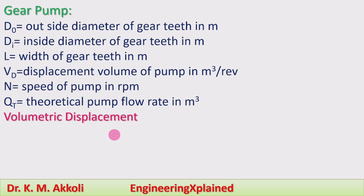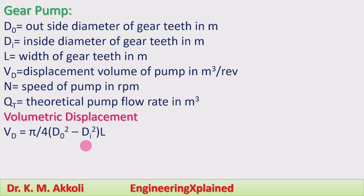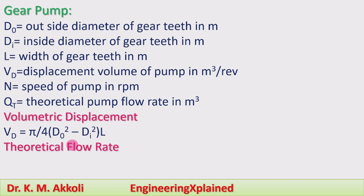The volumetric displacement can be written as Vd = π/4 · (D0² − Di²) · L. The theoretical flow rate will be Qt = Vd · N.